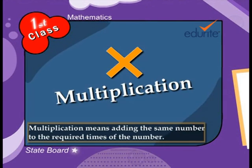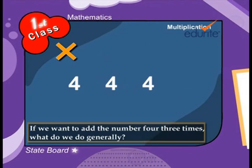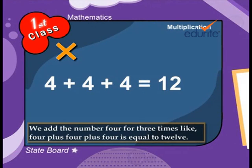Multiplication means adding the same number to the required times of the number. For example, if we want to add the number 4 three times, what do we do generally? We add the number 4 for three times like 4 plus 4 plus 4 is equal to 12.